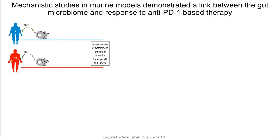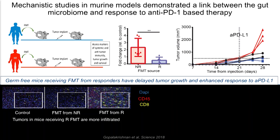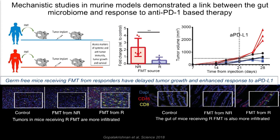We also performed mechanistic studies where we took fecal samples from patients who either responded or failed to respond to checkpoint blockade and put these into germ-free mice. We looked at systemic immune responses — which were completely different across groups — then implanted melanoma tumors. If mice got a fecal transplant from a responding patient, they either flat-out rejected the tumors or the tumors grew quite slowly, and they responded well to checkpoint blockade. If they got a fecal transplant from a non-responding patient, tumors grew rapidly and failed to respond. Mice that received an FMT from a responder had a dense T-cell infiltrate, and the gut was also more infiltrated with T-cells, suggesting it may act as a reservoir.